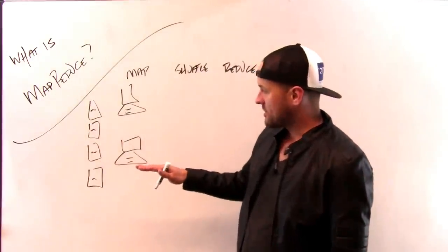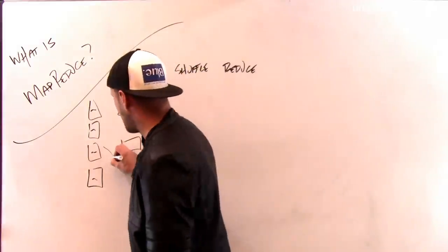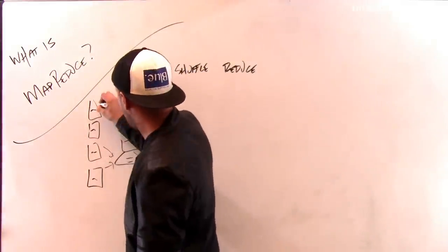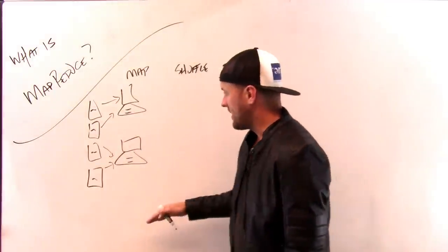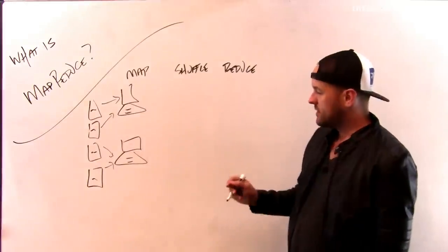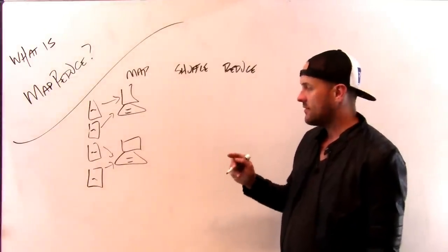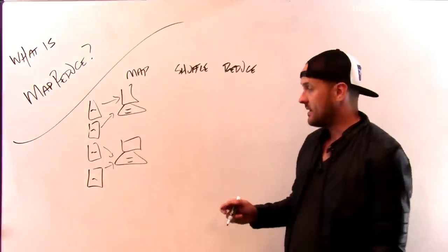The first thing I'm going to do is I'm going to divide the documents between the different computers. So I'm going to assign these two documents to this guy, and I'm going to assign these two documents to this guy. And now, this is the map phase, and what each computer is going to do is it's going to produce a count of the number of times that a particular word appeared in the documents.